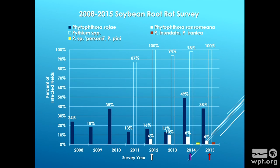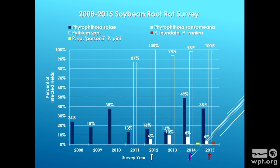But we're finding more Phytophthora species, and I want to talk about those. We started this survey in 2008 looking for Phytophthora sojae. When I say we're looking for them, we're using methods based on genetic material, because it's very difficult to identify these organisms just by morphology under the microscope. Over the years we've had quite a bit of Phytophthora sojae — those are the blue bars. In 2014 it was 49%, and in 2015, 38%. So it's still a lot of Phytophthora sojae.